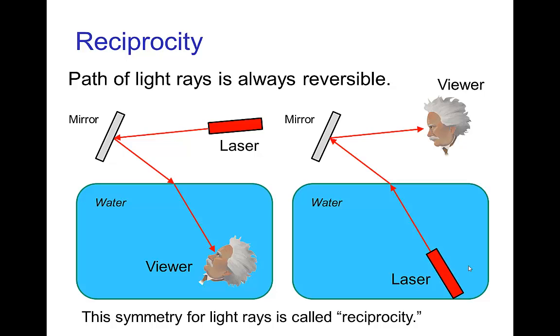the resulting light ray follows exactly the same path. So we have a symmetry of light going from a source to a viewer. It's the same path if we switch the viewer and the source.